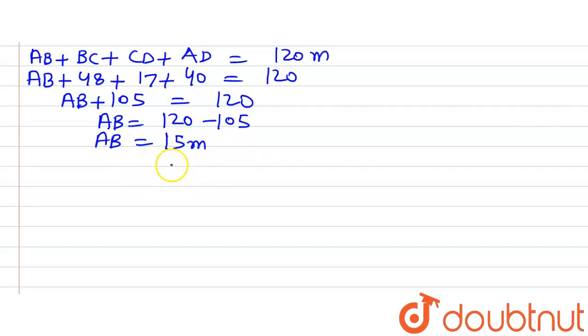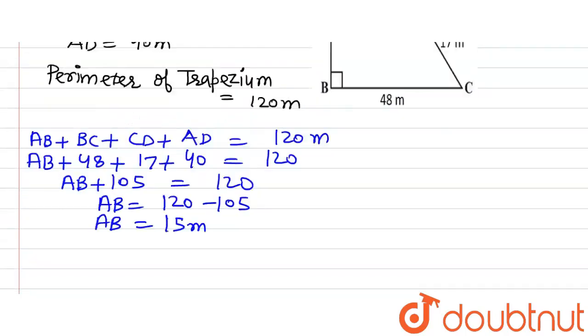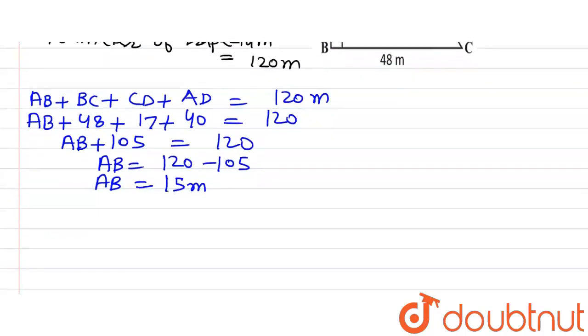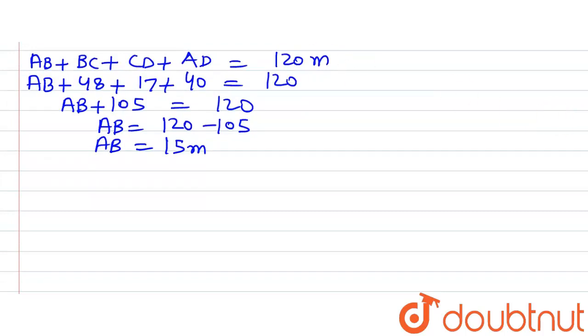So now we have the value of AB. Also in the question it is said that AB is perpendicular to BC and AD. That means that this is a trapezium with two parallel sides AD and BC and the height AB. So now we will apply the formula of area of trapezium.